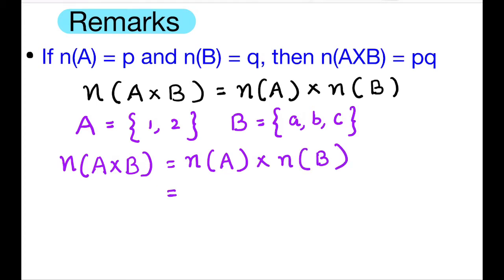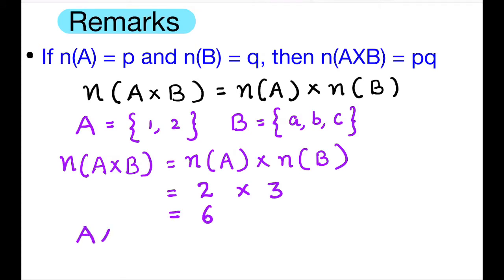Here, the number of elements in set A is equal to 2, and the number of elements in set B is equal to 3. So, 2 multiplied by 3 is equal to 6. Let us find A cross B and see whether the number of elements in it is equal to 6.